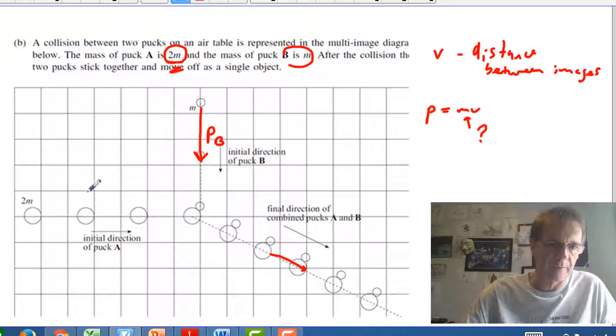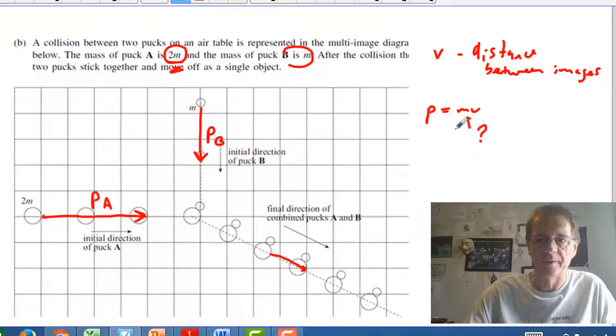We've taken over twice as many pairs of images so we'd actually go from there and take it all the way across to here. And that's momentum of A. And that's represented by the 2m part of it because it's doubled.